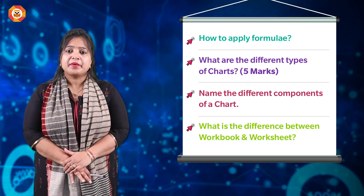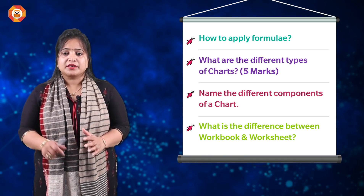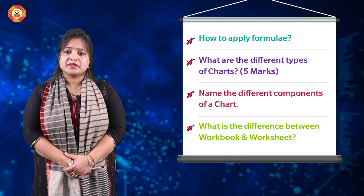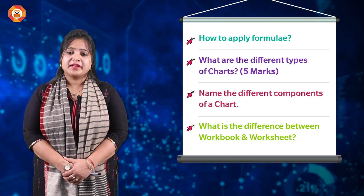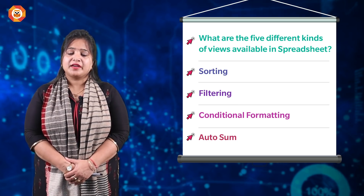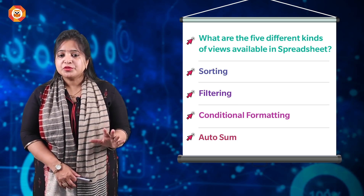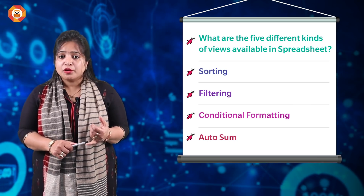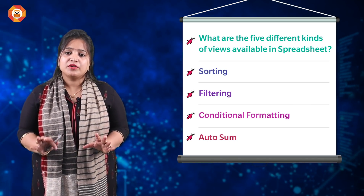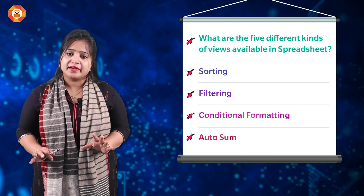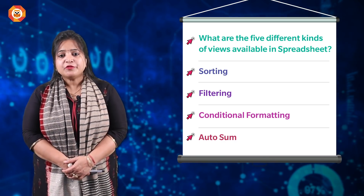The next topic in this chapter is: what is the difference between a workbook and a worksheet? That is an important question. Then, what are the five different kinds of views available in a spreadsheet? There are five: page layout, normal view, custom view, and others — study them thoroughly. This is a very repeated and favourite CBSE question.